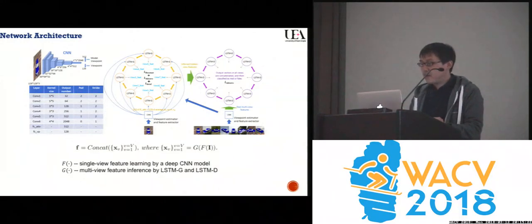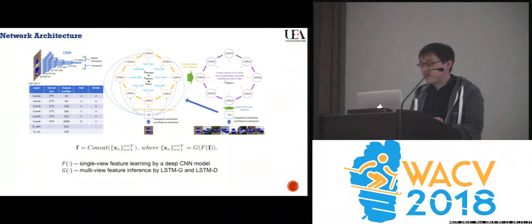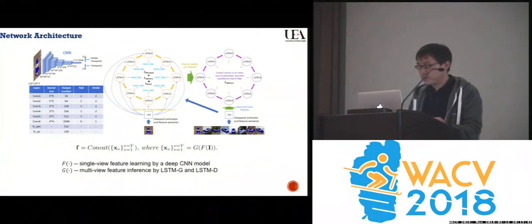Moreover, given an image pair, a re-ID loss is configured at the end of LSTM-G for distance-metric learning. In the test phase, the input one-view image only needs to forward-pass the CNN and LSTM-G modules, and then all the inferred feature vectors in different viewpoints can be simply concatenated for computing the distance with other vehicles.